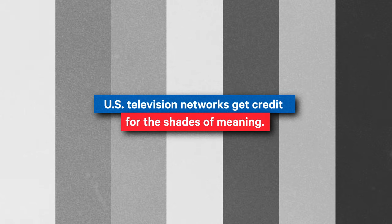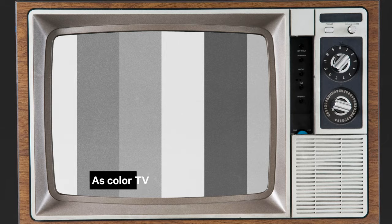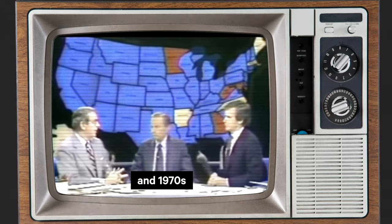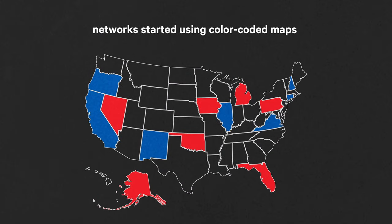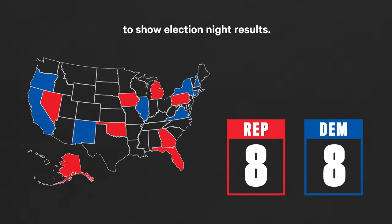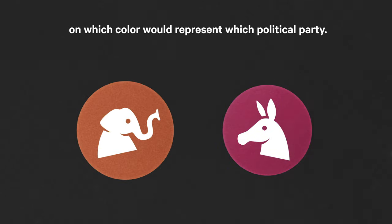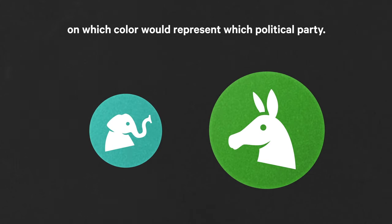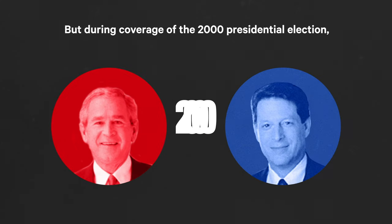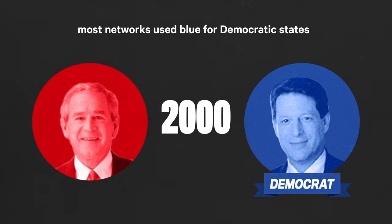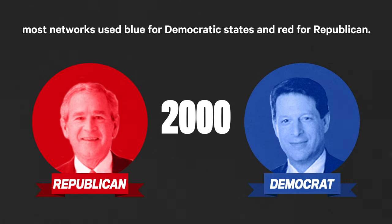U.S. television networks get credit for the shades of meaning. As color TV gained popularity in the 1960s and 1970s, networks started using color-coded maps to show election night results. At first, there was no consensus on which color would represent which political party. But during coverage of the 2000 presidential election, most networks used blue for Democratic states and red for Republican.